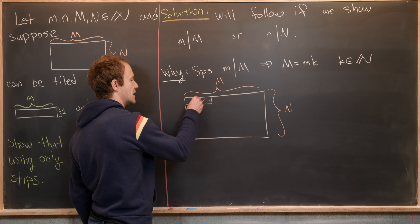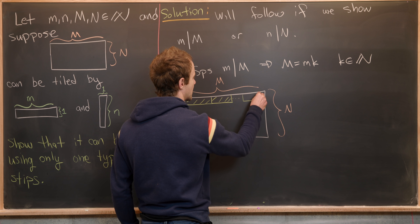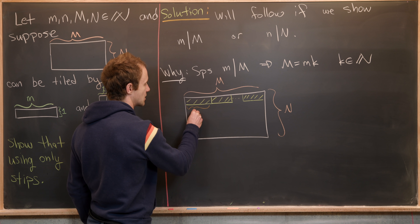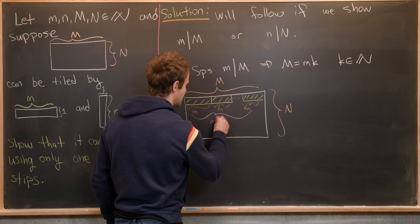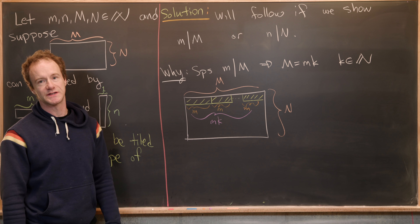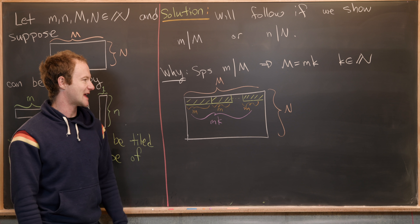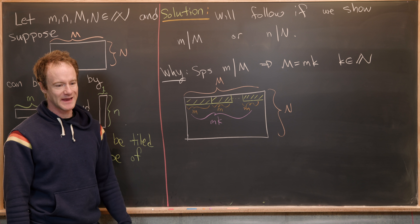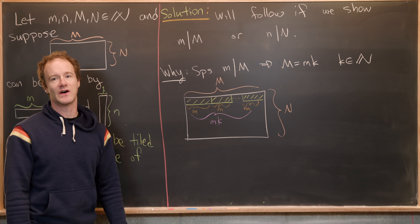Each strip has length little m, making the whole row little m times k in length. The other case — little n divides capital N — is really just this picture on its side. What we'll show from here on out is that either little m divides capital M or little n divides capital N.